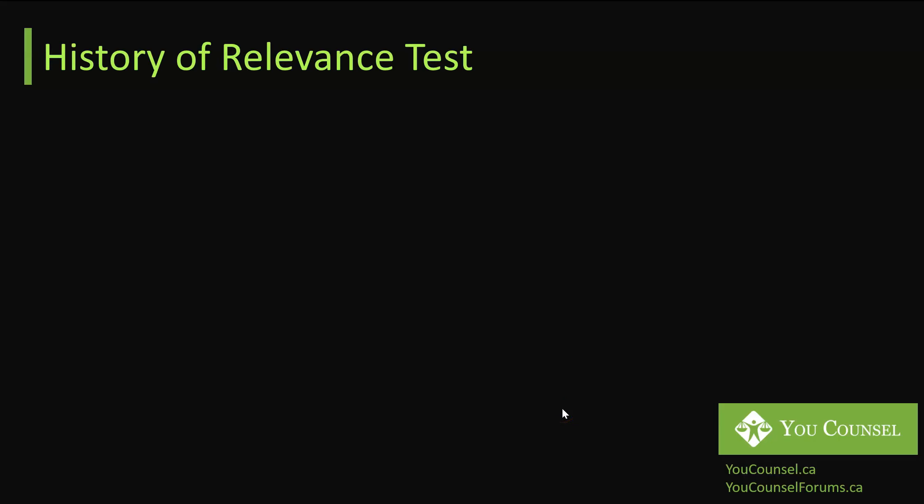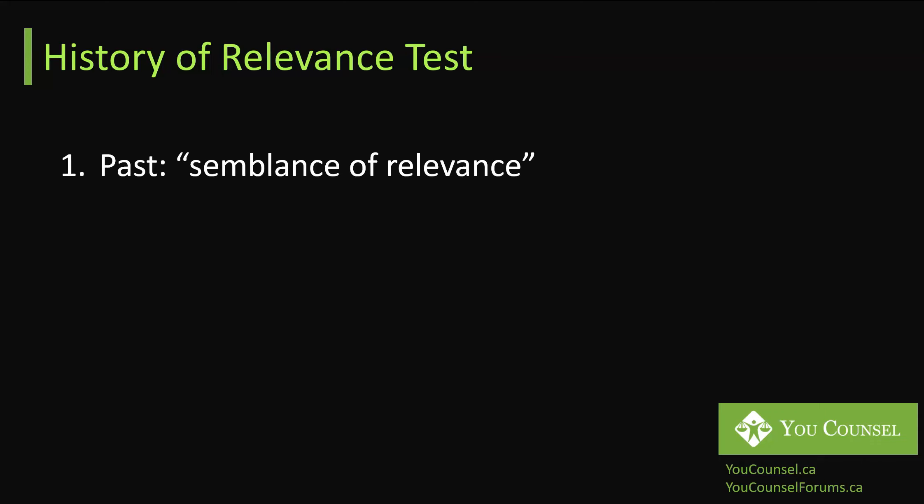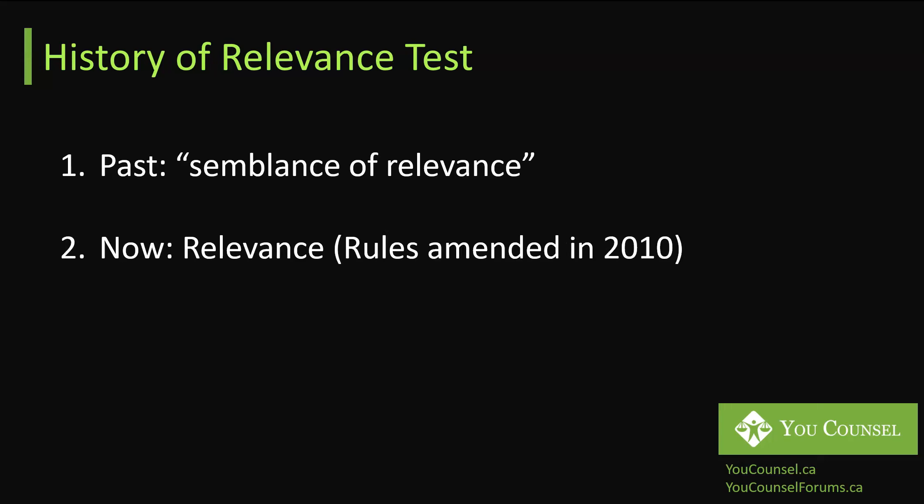To properly understand relevance, one way is to understand the history of the relevance test. In the past in Ontario, the test was called semblance of relevance. As of 2010, the rules were amended and now the test is simply relevance. Under semblance of relevance, documents were viewed broadly — if there was any chance, any semblance that a document could be relevant to the issues in the action, it would be considered relevant.